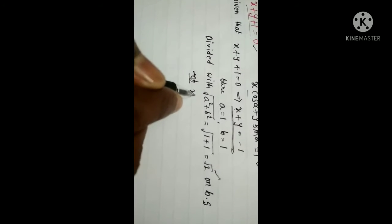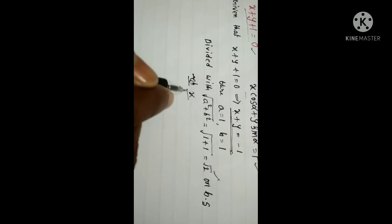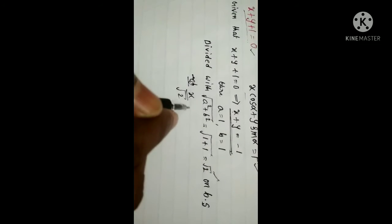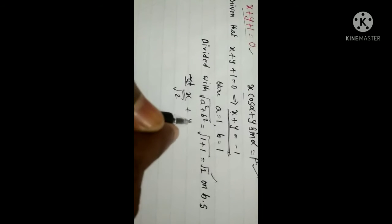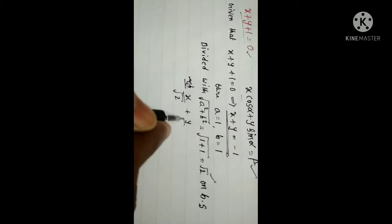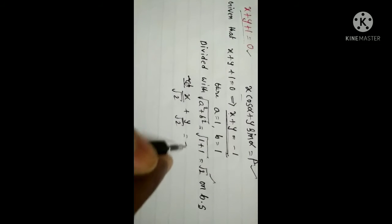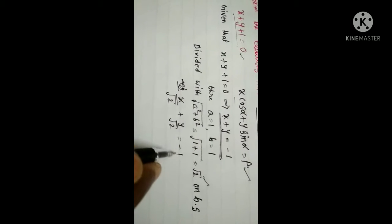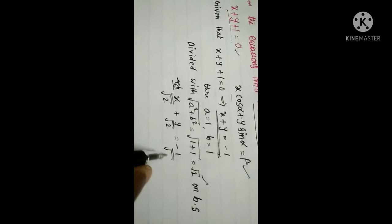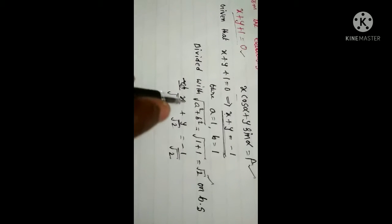So we get: x divided by √2 plus y divided by √2 equal to minus 1 divided by √2.